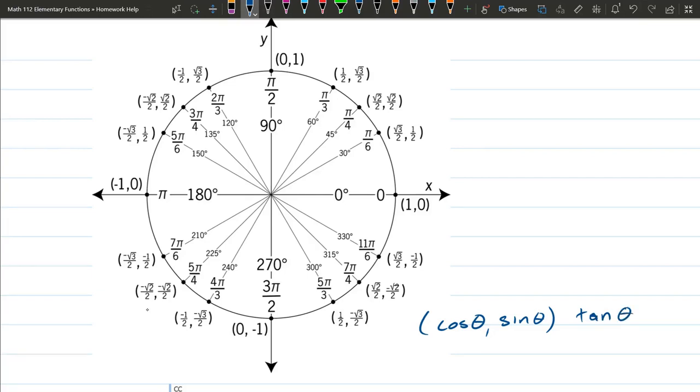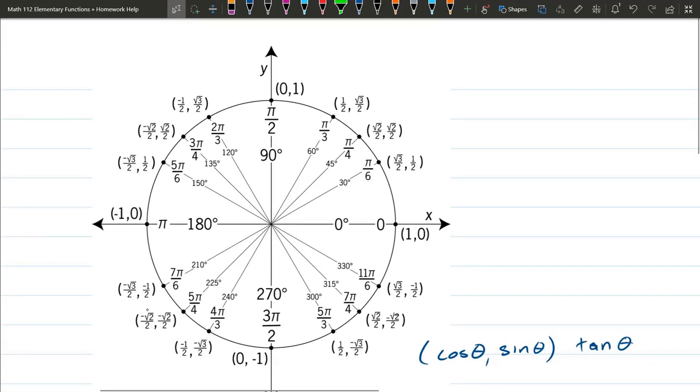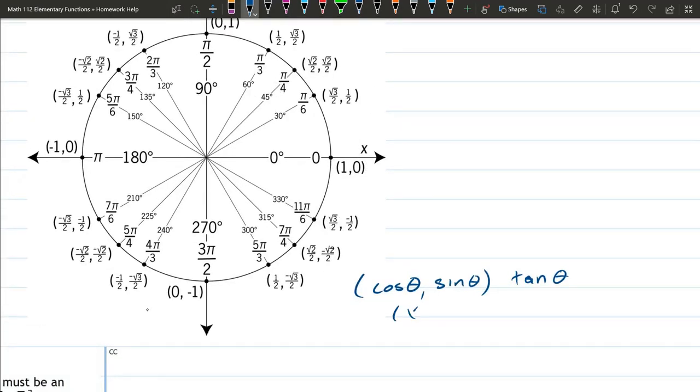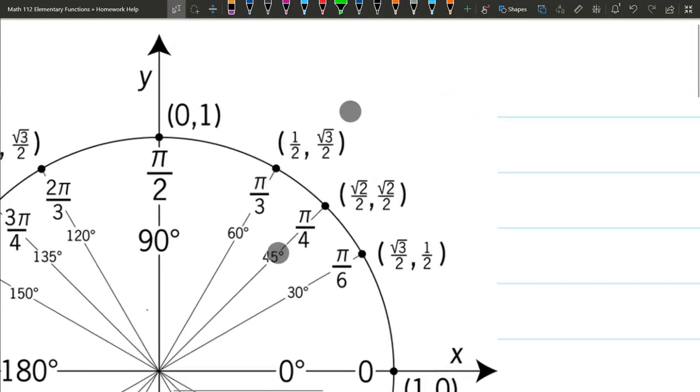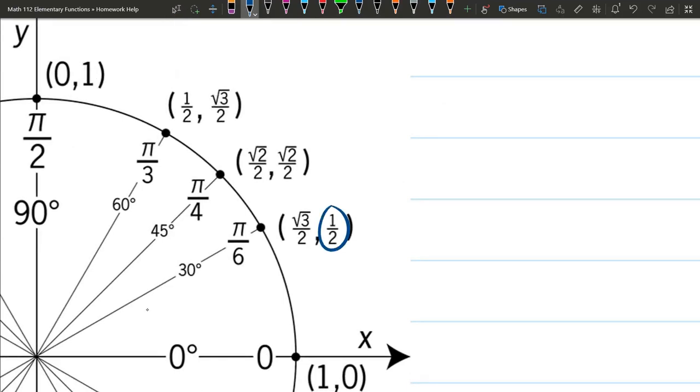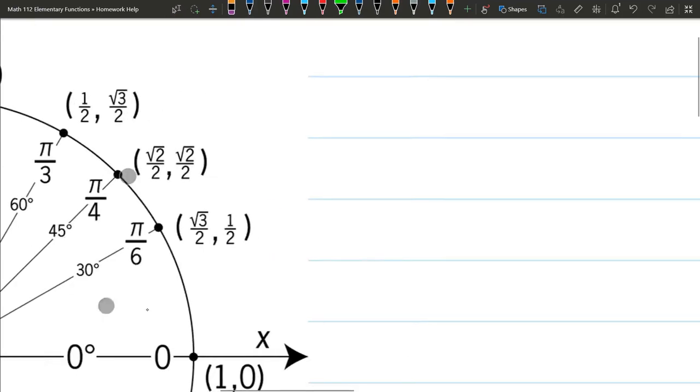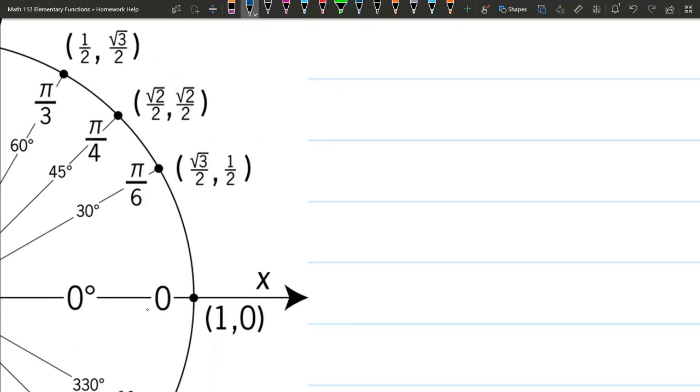So this is how they all look. I'm only going to do the first quadrant. You just make them negative here, positive here, negative here for the other quadrants. What is tangent? So cosine is x, sine is y. And of course, tangent is y over x. So all we're going to do is take these values and just do y divided by x and then simplify. So we'll start with (0,1). 0 over 1 is 0. So that means tangent of 0 is 0.